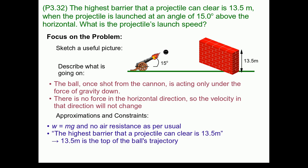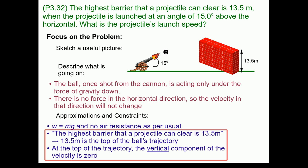The first one is in the question: the highest barrier that a projectile can clear is 13.5 meters. What does this mean? It means that 13.5 meters is the top of our little cannonball's trajectory. And at the top of a trajectory, the vertical component of the velocity is going to be equal to zero. These two approximations and constraints are quite a bit more difficult to think of, but you'll get better at them with a little practice.